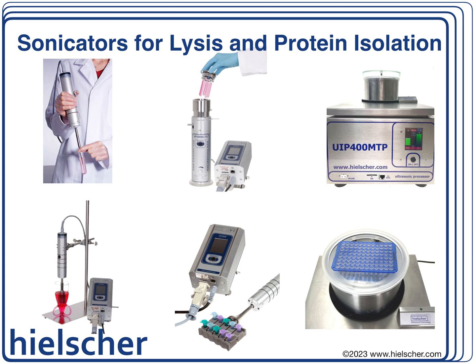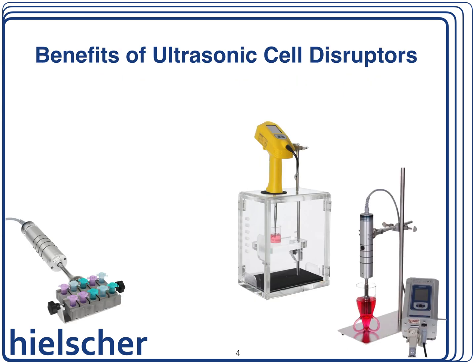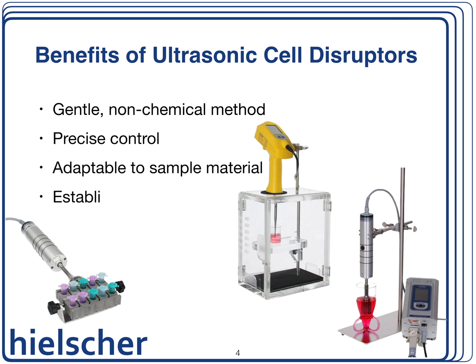Why are sonicators the preferred choice for cell lysis and protein extraction? Their effectiveness, versatility, and gentle approach set them apart from other methods. Ultrasonic homogenizers use ultrasonic waves and acoustic cavitation to carefully disrupt cell membranes and release important intracellular components, including proteins. Now let's take a closer look at why sonicators excel when it comes to cell and tissue related applications.